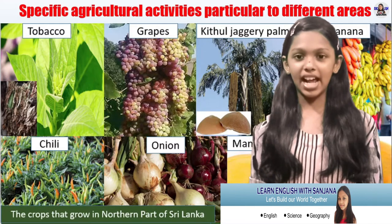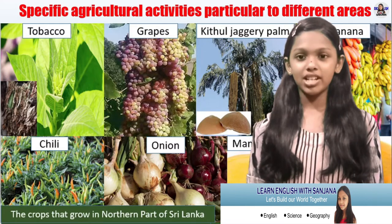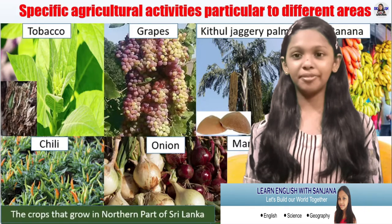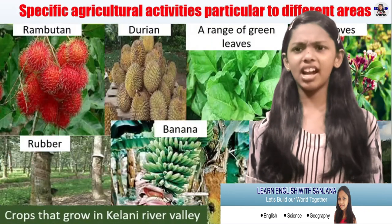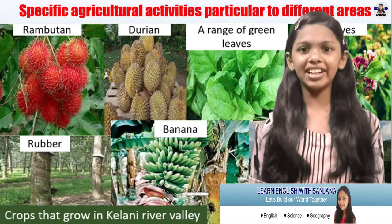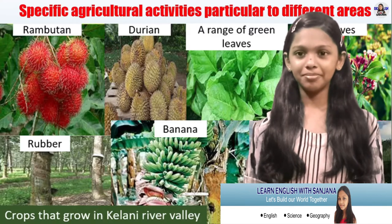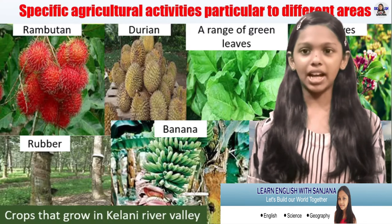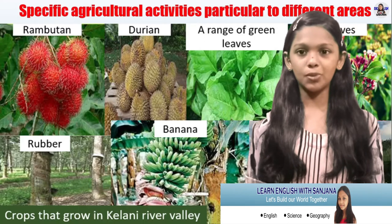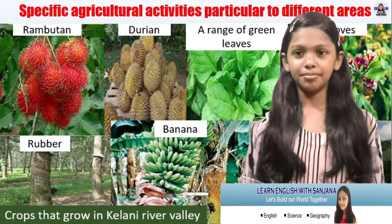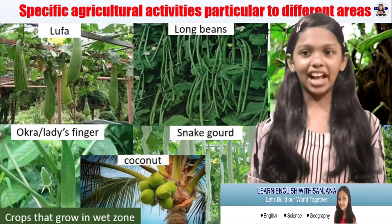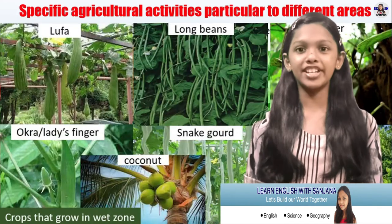Other crops from that region include banana, chili, onion, and mango. Let's have a general idea about the crops that grow in the Kelani River Valley: rambutan, durian, a range of green leaves, cloves, rubber, banana, and tea.